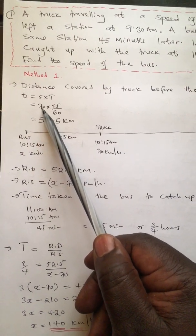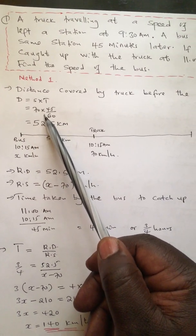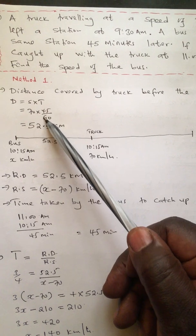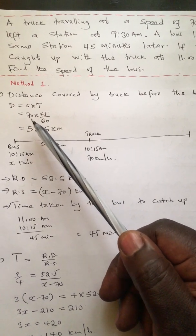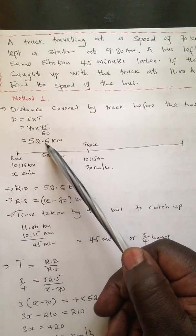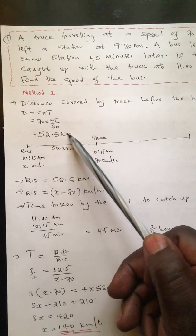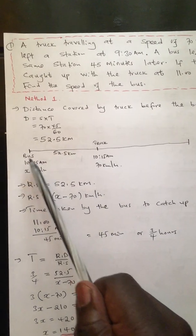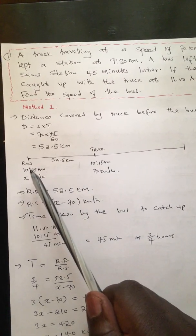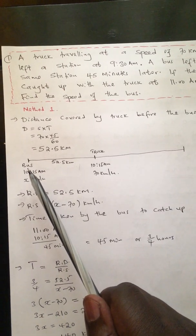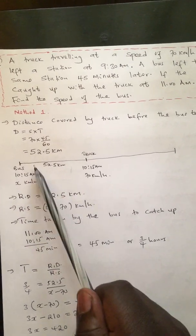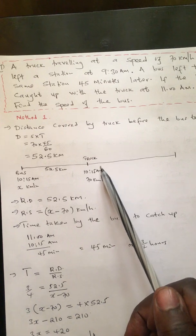The speed of the truck was 70 km/h. The time it traveled before the bus took off is 45 minutes, which I convert to hours: 45 over 60. Multiplying gives 52.5 kilometers — the distance between the bus and the truck after 45 minutes. At that point, the exact time is 10:15, and the distance between the two bodies is 52.5 km.